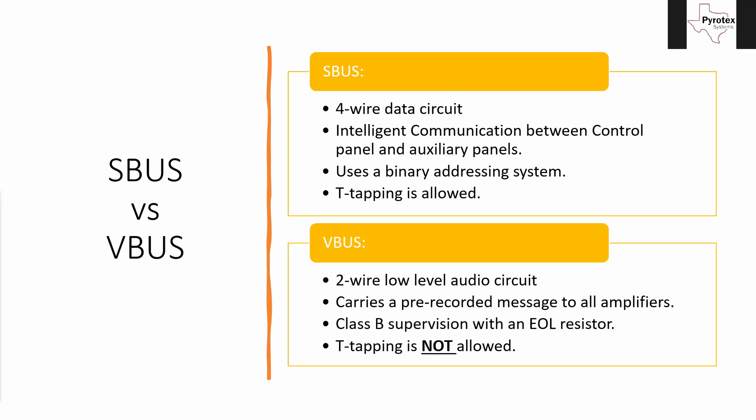The VBUS is Class B supervised, just like a speaker circuit or a NAC circuit. There's an end-of-line resistor at the end, and that's the only way the panel knows the circuit is complete — by seeing that resistor. It's not actually talking to each of those panels; it's just sending an output and supervising for that resistor. Because of that, there is no T-tapping allowed on the VBUS.